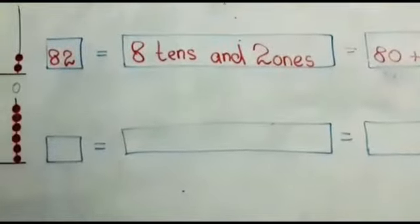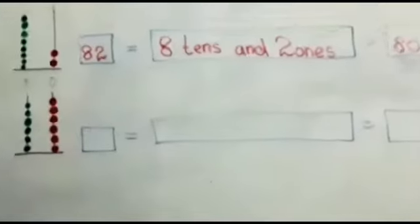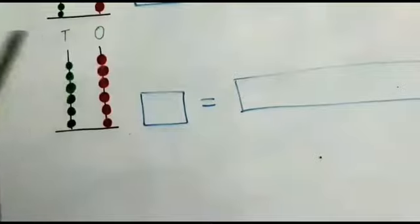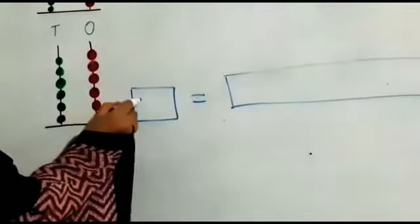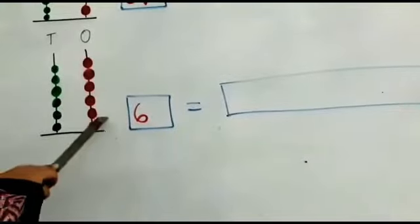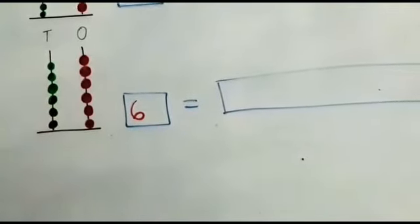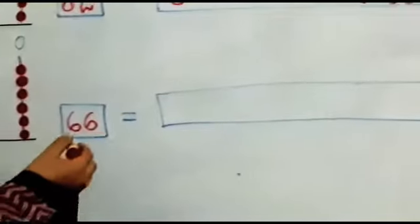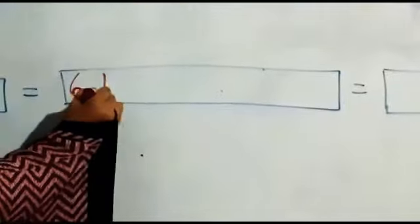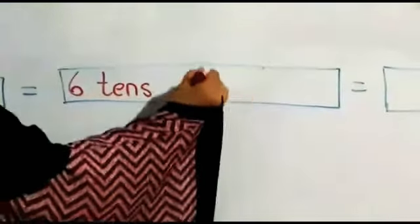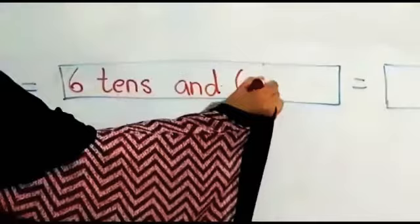Now in part C. How many 10s are there? 1, 2, 3, 4, 5, 6. There are 6 tens and how many ones? 1, 2, 3, 4, 5, 6. There are also 6 ones. So we can write 6 tens and 6 ones.